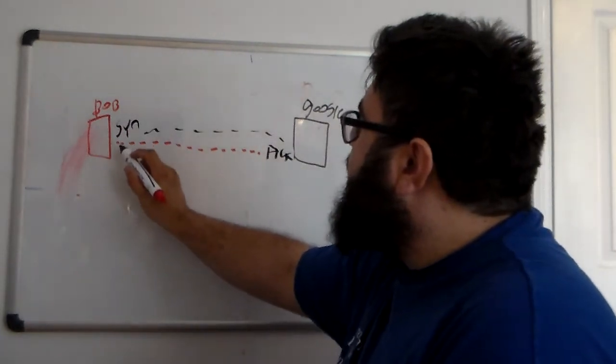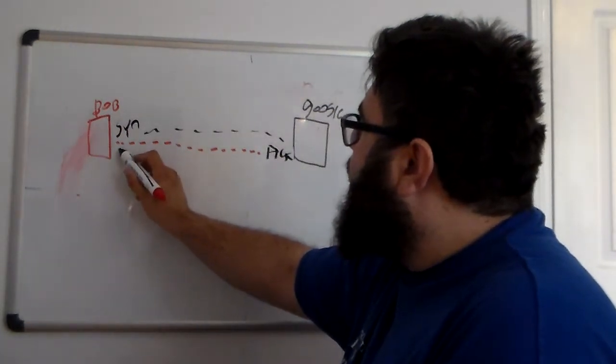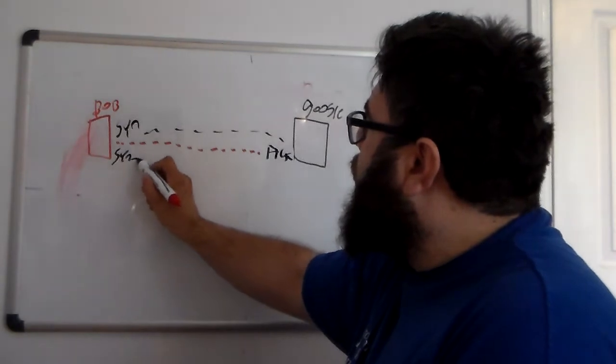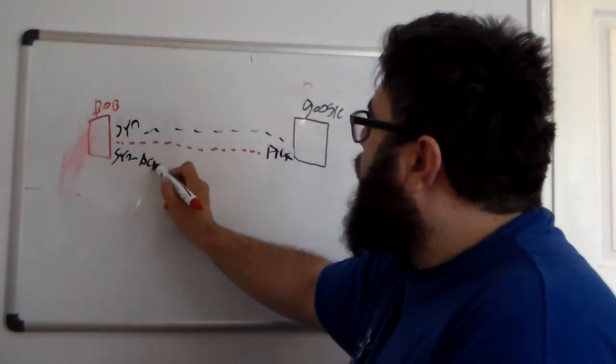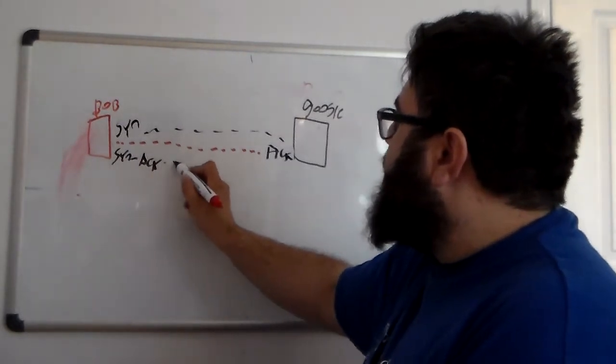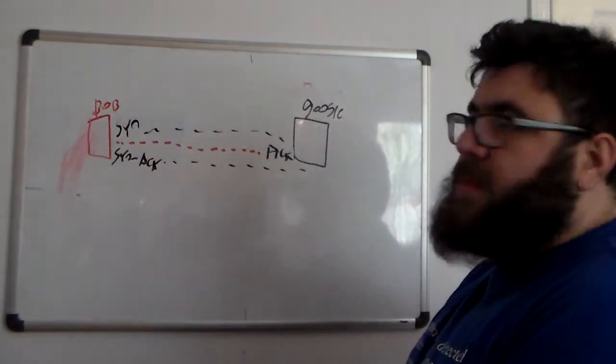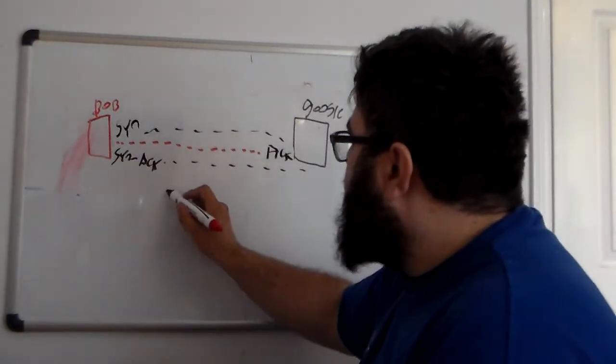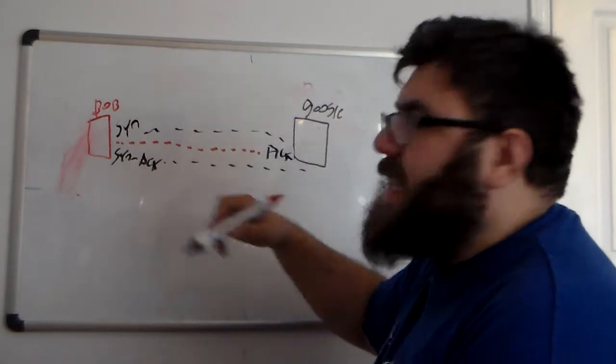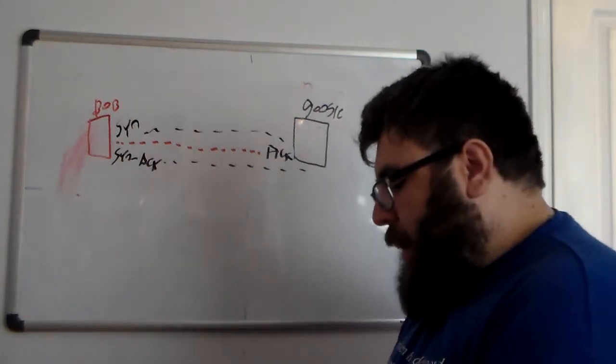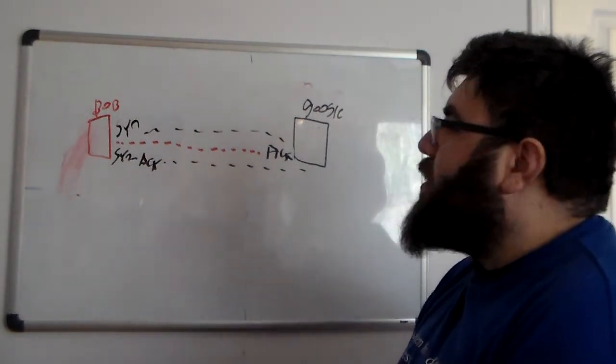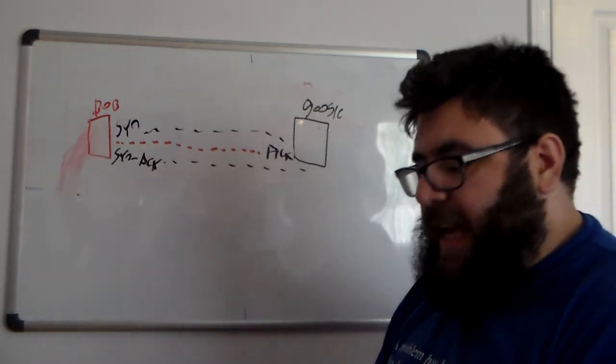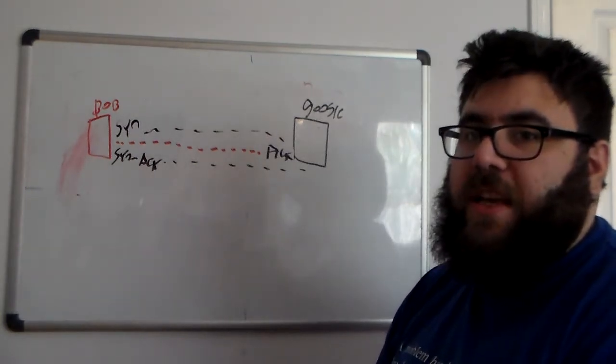And then to complete this connection, the client then sends a SIN ACK, so SIN acknowledgement to Google. And then the connection is established. So this is what's known as the TCP handshake, the three-way handshake.